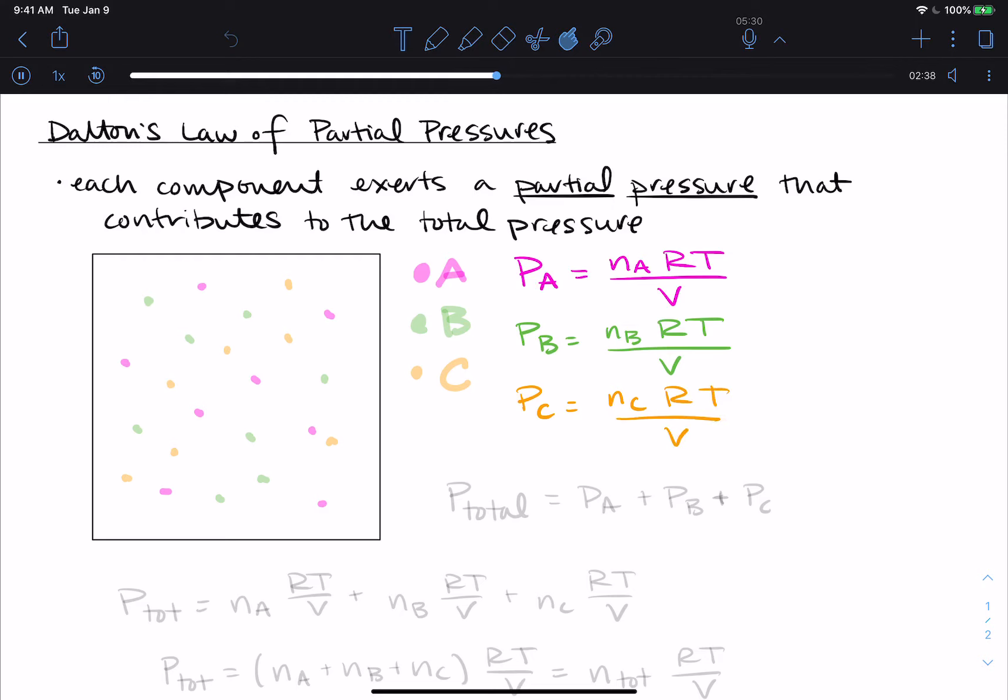So what Dalton's law of partial pressures will tell us is that the total pressure is equal to the pressure of A plus the pressure of B plus the pressure of C. So we can take the individual pressures and add them up to be the total pressure.